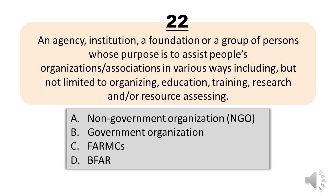Number 22. An agency, institution, a foundation or a group of persons whose purpose is to assist people's organizations/associations in various ways including but not limited to organizing, education, training, research and/or resource assessing. A. Non-government organization, NGO. B. Government organization. C. Pharmacies. The correct answer is Letter A. Non-government organization, NGO.